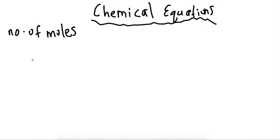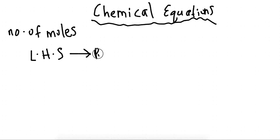A chemical equation is used to describe a chemical reaction. You have something on the left-hand side, let's call it LHS. Something happens and it becomes something new on the right-hand side. This arrow shows the change from the left-hand side to the right-hand side. There are some basic rules to know when we form chemical reactions.